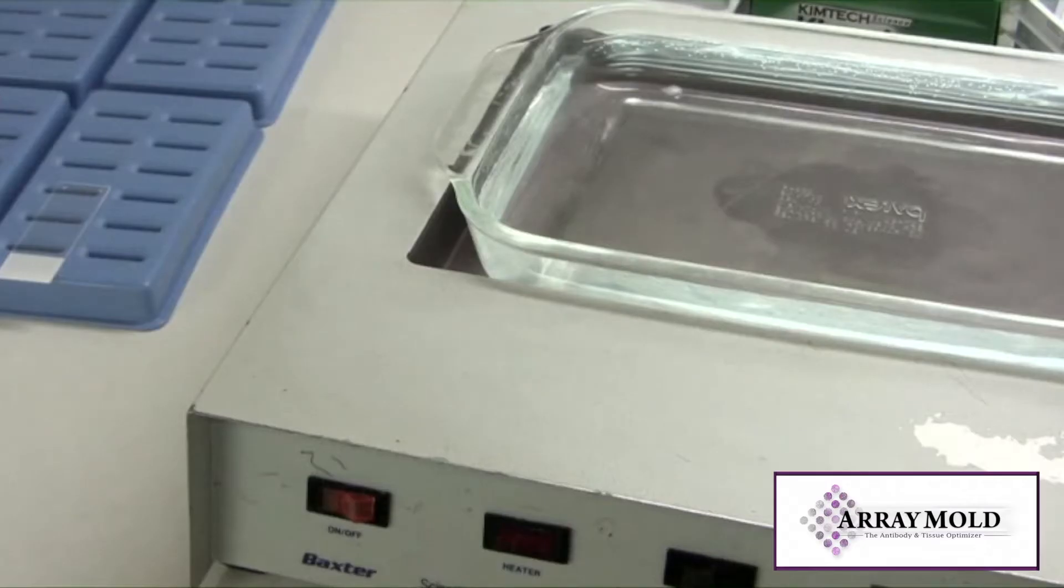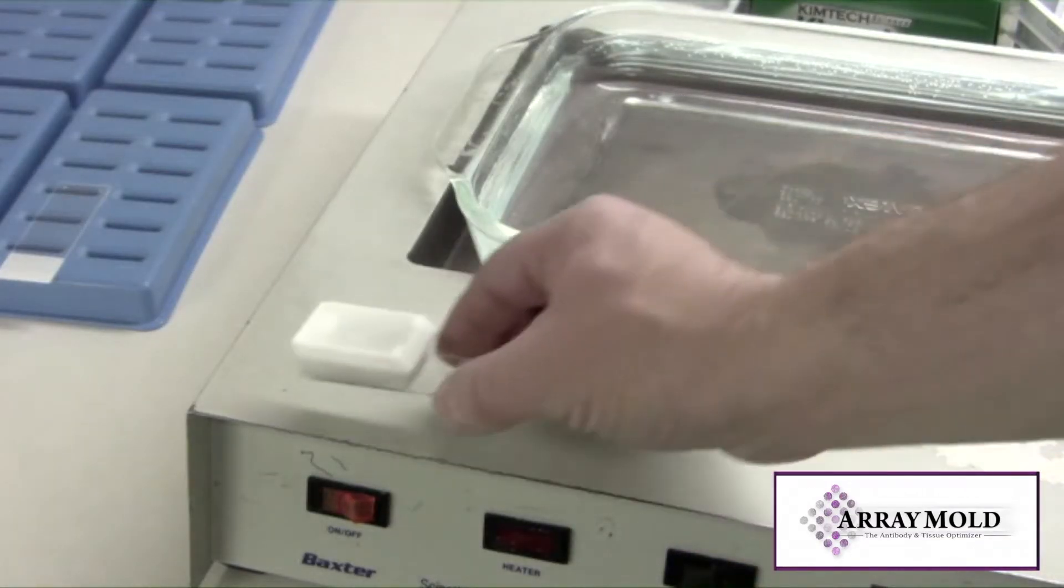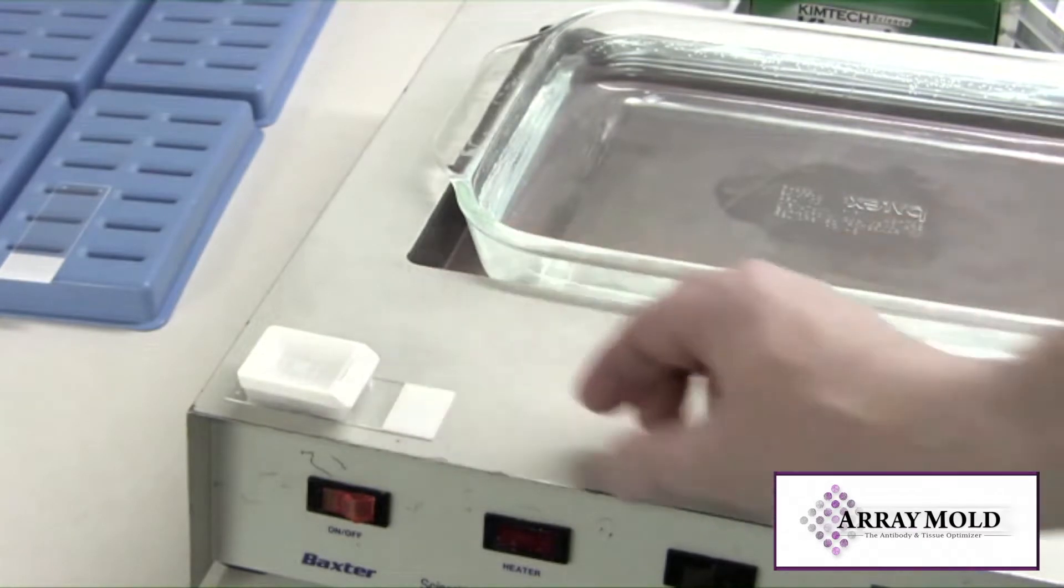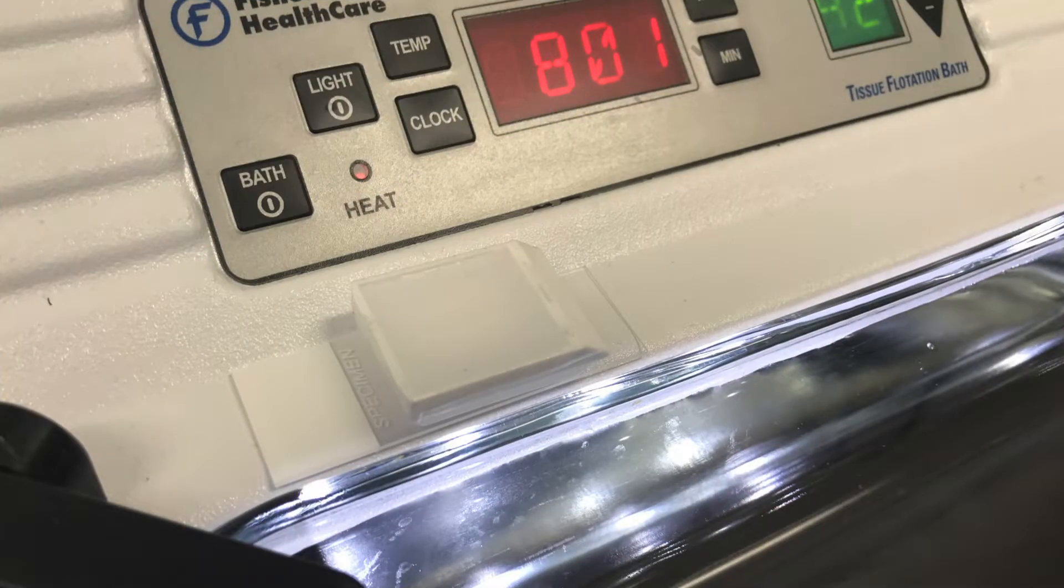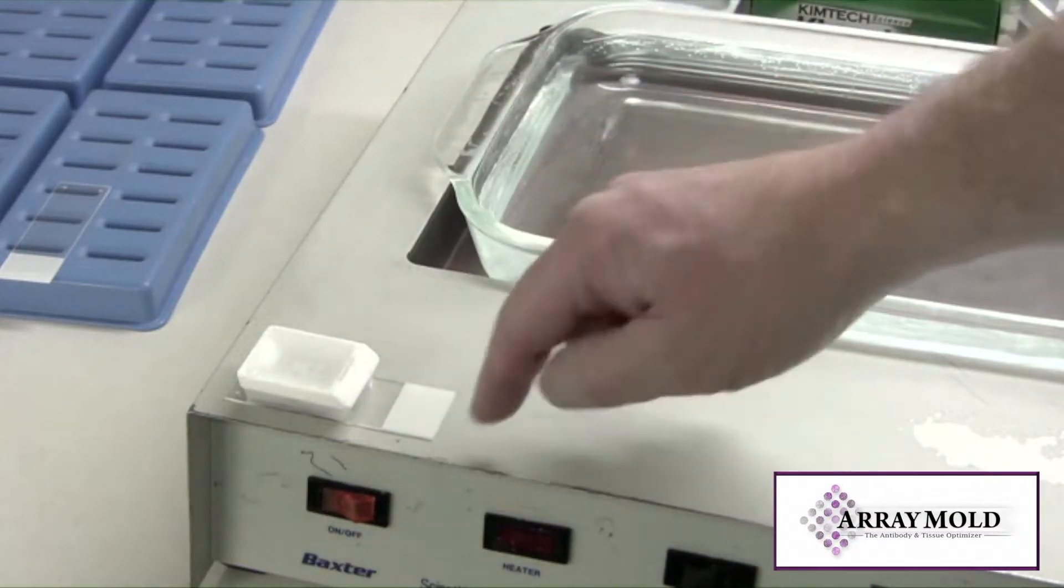Since I only have one oven, the array mold block still needs to stay warm and soft while the single slide heats up. I'm placing my array block on the side of my water bath. It's warm enough to keep the block soft while the single slide is heating up.